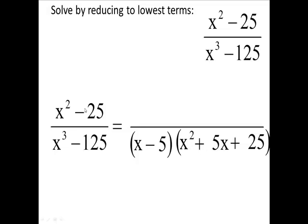Now the difference of two squares should be very easy. We have x minus 5 times x plus 5.